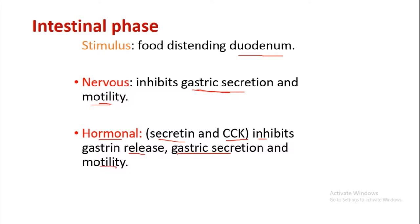In the cephalic phase, gastric secretion is stimulated. In the gastric phase, there is a need for gastric secretion so it is stimulated. But in the intestinal phase, once food has entered the duodenum — the first part of the small intestine — there is no further need for gastric secretion or gastric motility. So in the intestinal phase, these hormones and nerves inhibit gastric secretion and motility.